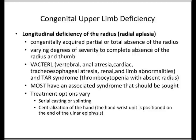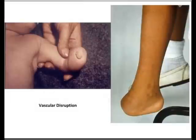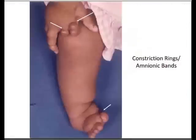In terms of transverse deficiencies, the limb is developed normally to a particular level, beyond which no skeletal elements exist, although there might be digital buds. The cause can vary from vascular disruption, failure of formation, or constriction bands. Here is an example of vascular disruption — you can see the very tiny toes — and this shows a constriction ring band with an abnormality of the great toe.